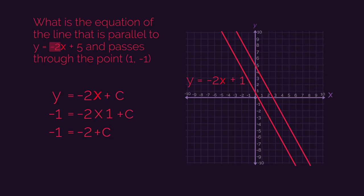So negative 1 equals negative 2 plus c. A little bit of rearranging, so add 2 to both sides. That gives us c equals 1. So the equation of the parallel line is y equals negative 2x plus 1.